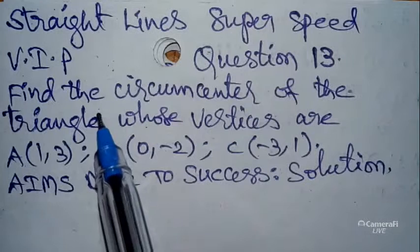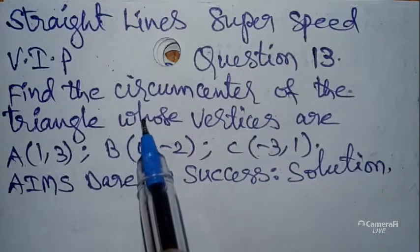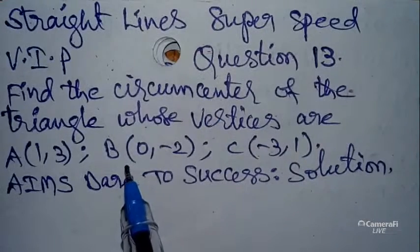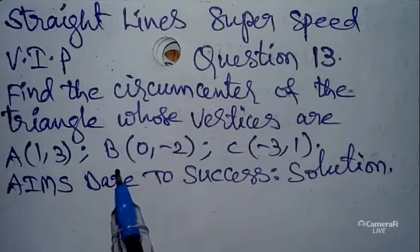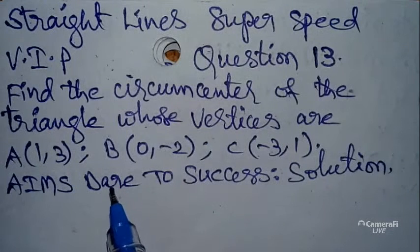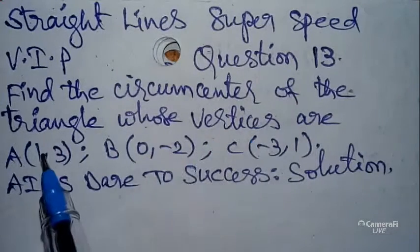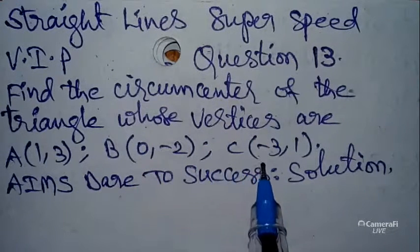Some students asked me they are having a little bit of difficulty solving the circumcenter by using the three-points method. So today I will explain this question with my neat and clear step-by-step explanation. Find the circumcenter of the triangle whose vertices are: A(1, 3), B(0, -2), C(-3, 1).